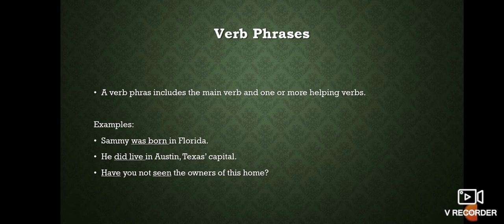For example, 'Sammy was born in Florida.' Here 'born' is the main verb and 'was' is the helping verb, so 'was born' is a verb phrase. Another example: 'He did live in Austin, Texas capital.' Here 'did' is the helping verb and 'live' is the main verb.